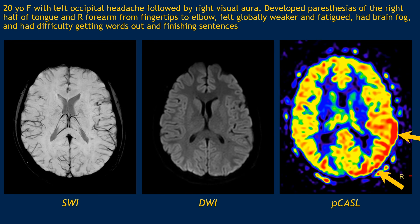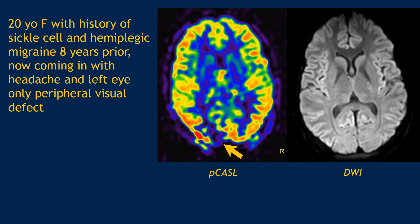This is another example of a young 20-year-old female with occipital headache and visual aura. Everything on conventional imaging was normal, but perfusion images on ASL showed that the left temporal occipital region was elevated in perfusion flow. Another patient with sickle cell also had auras, and there was decreased perfusion in the right occipital lobe, probably explaining her visual deficits at that time. This is also probably hemiplegic migraine.